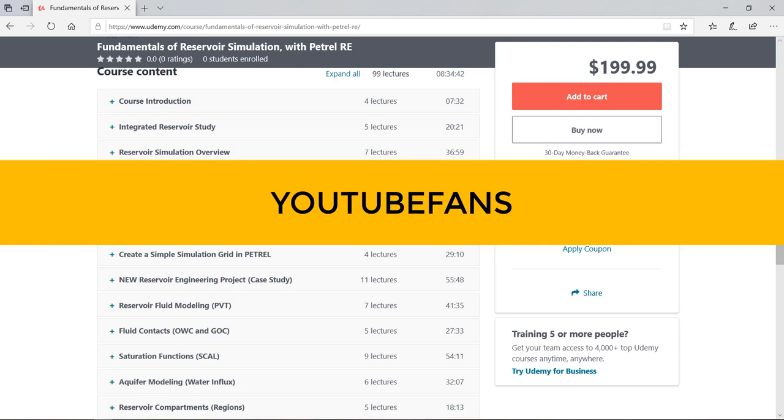I have also provided a very simple link in the description section that will take you directly to a page where the coupon has already been applied. So all you would need to do is to click on the enroll now button and then you have it. Thank you.